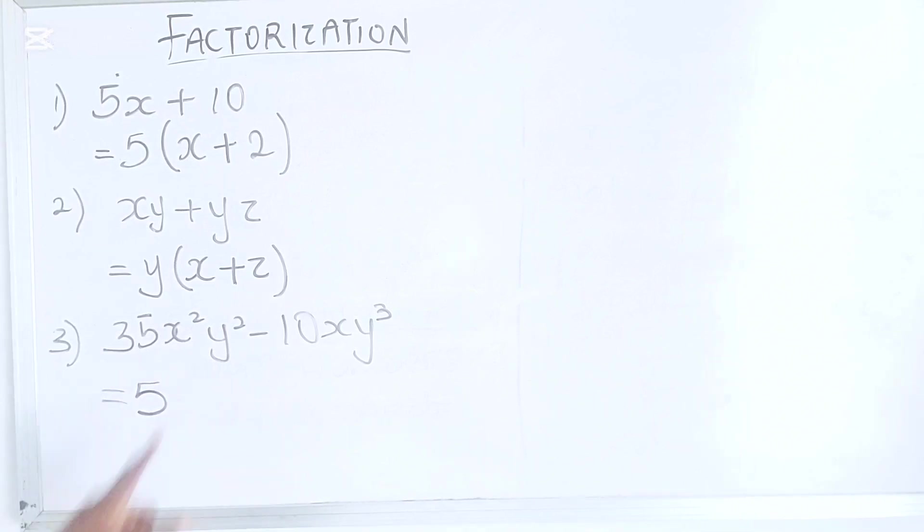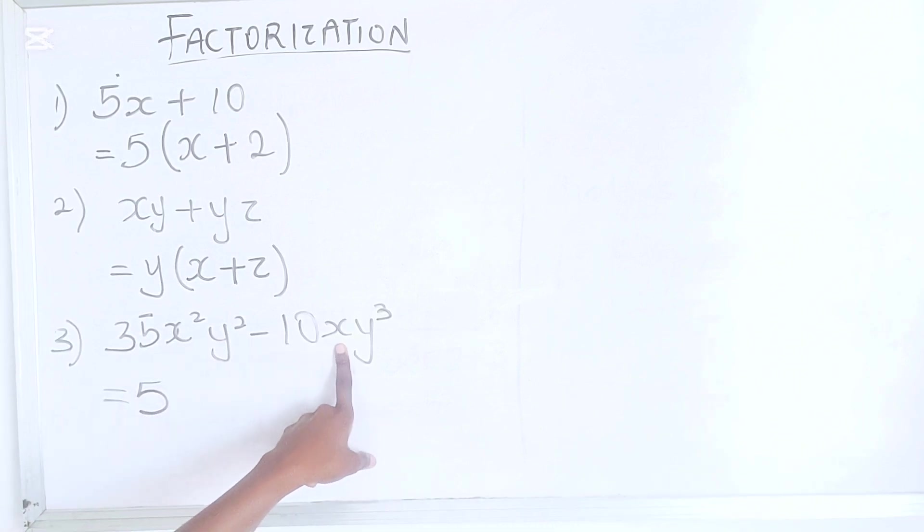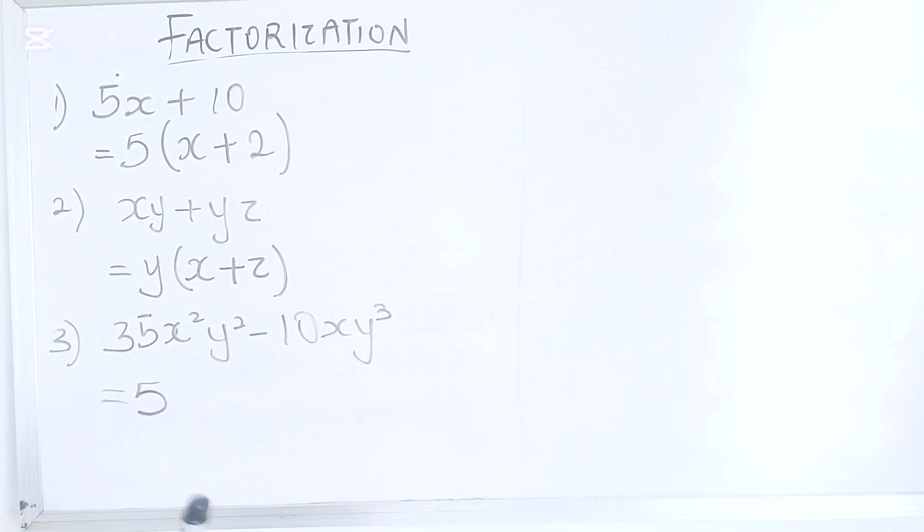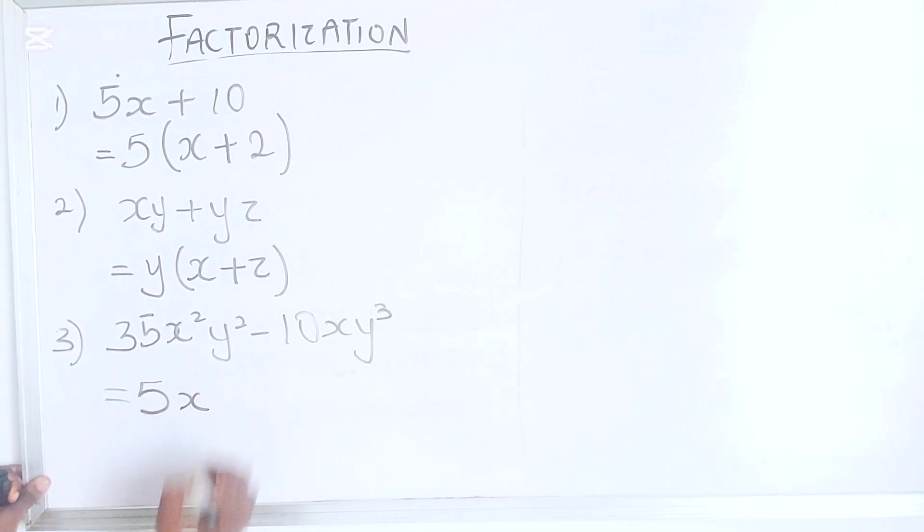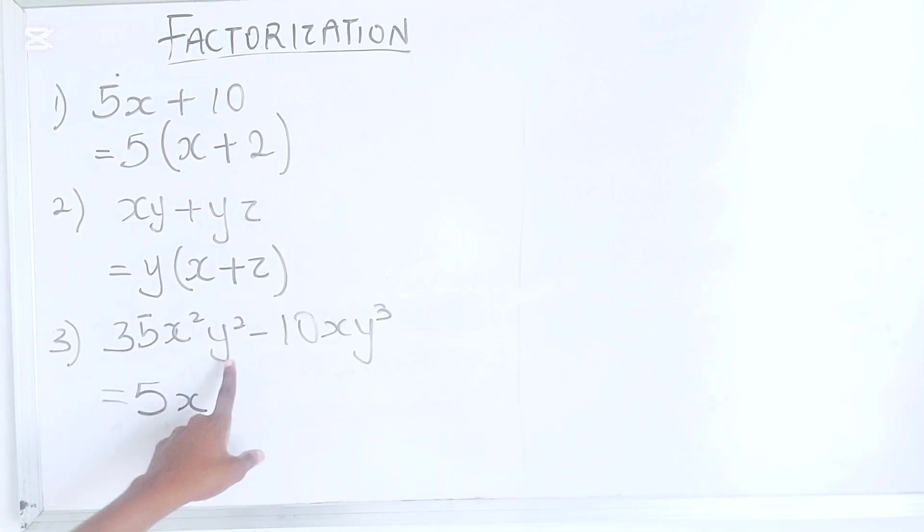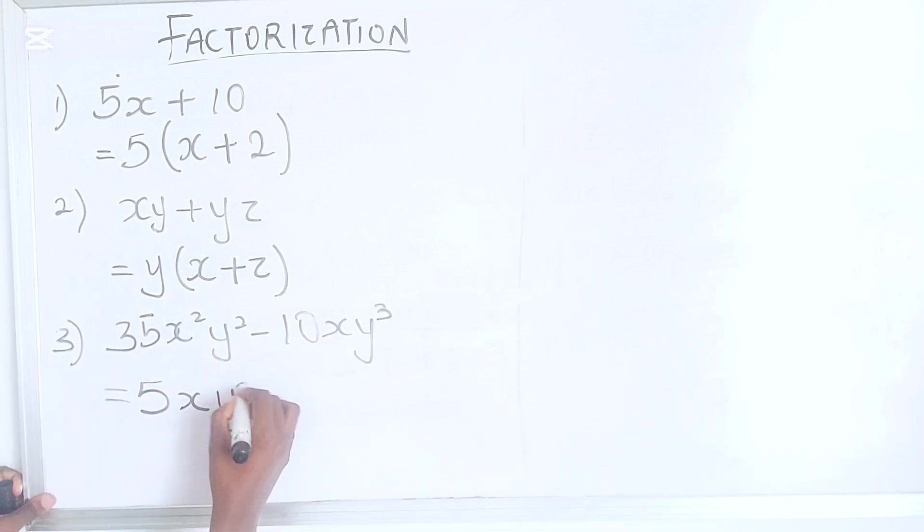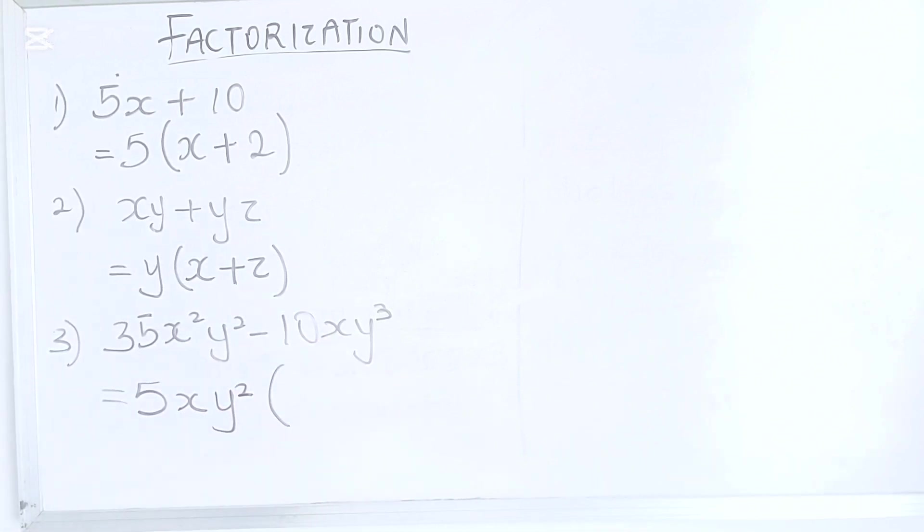Now you're not stopping there. You have letters. You have X and Y. So this is where you have to be very careful. The highest power of X is 2. The highest power of X is 1. So pick the one with the lower power, which is this. Moving on to Y. The highest power here is 2. The highest power here is 3. Pick the lower power.